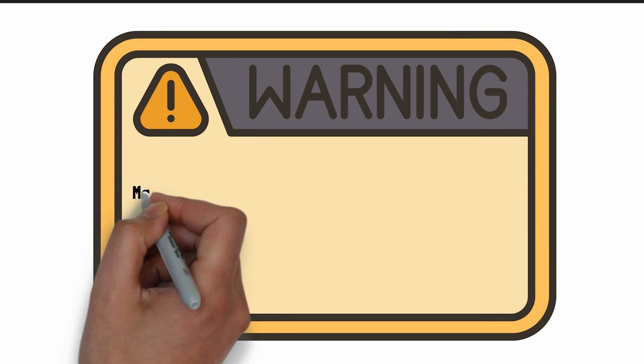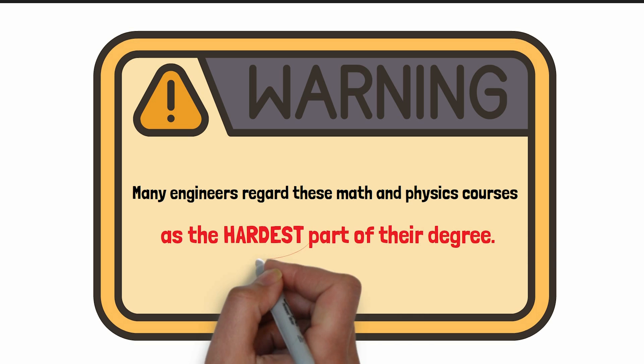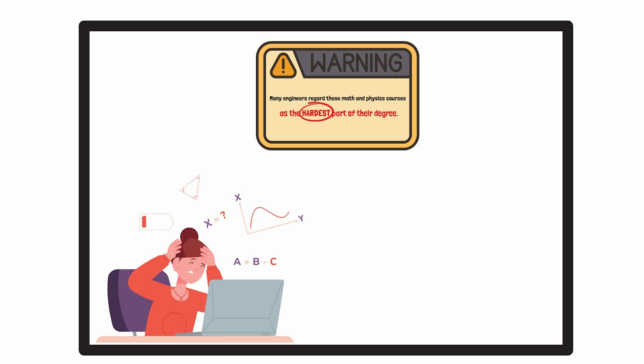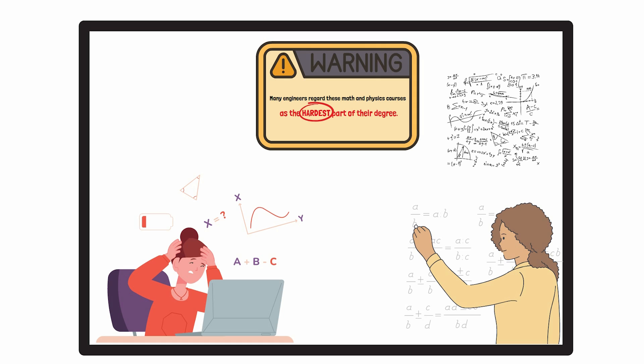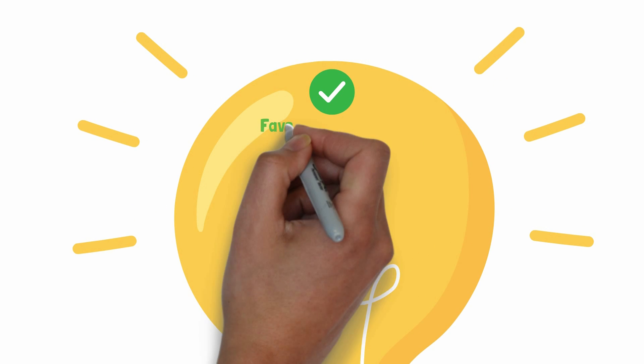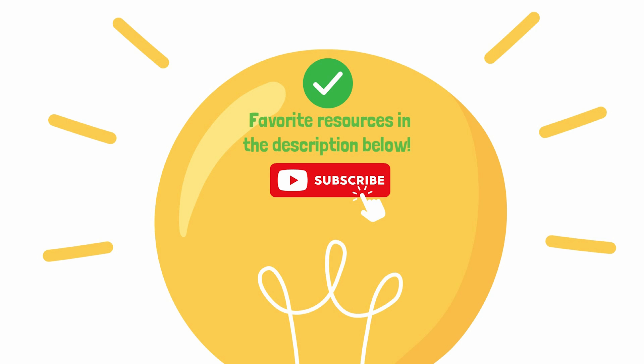Now, we need to warn you. Many engineers regard these math and physics courses as the hardest part of their degree. Yeah, you heard me right. This first stage can be the most difficult. Although the problems get more technically challenging later on, the difficulty and pace of these courses completely shock students that are used to high school classes. This is why you'll see the most students dropping out of the degree in this stage. To combat this academic culture shock, we've left our favorite resources in the description below so you can stay ahead of the curve. So make sure you subscribe for more engineering insider knowledge like this one.